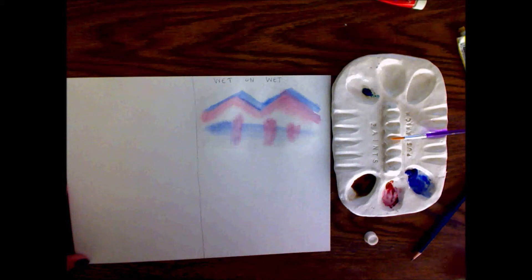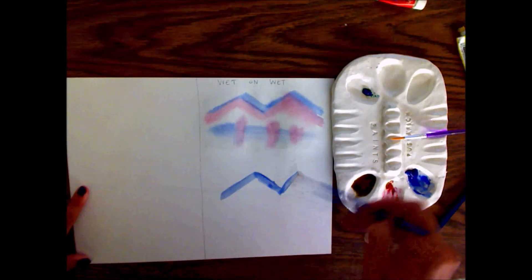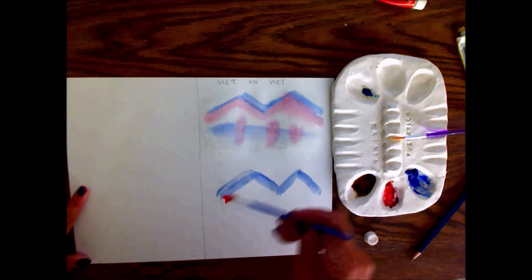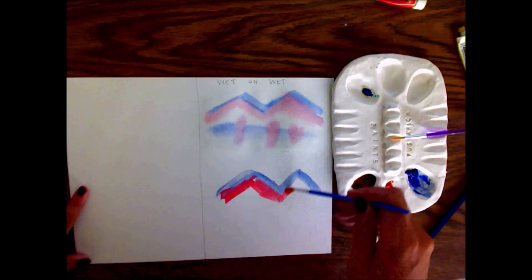The next technique is wet on dry. Here's my blue line. I don't have my paper wet underneath it. Here's my red line, wet next to wet, also still bleeds.